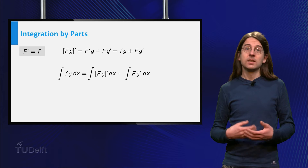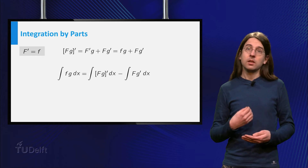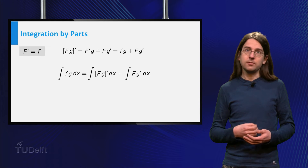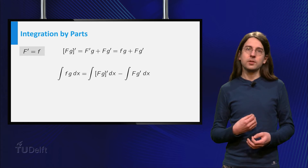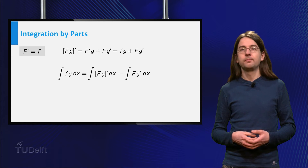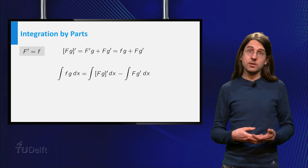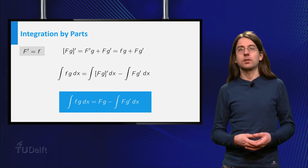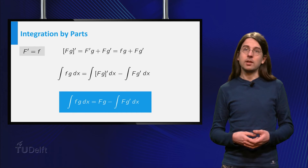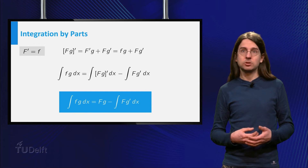Integrating both sides gives that the integral of little f times G equals the integral of the derivative of capital F times G minus the integral of capital F times G prime. An antiderivative of the derivative of capital F times G equals capital F times G itself.